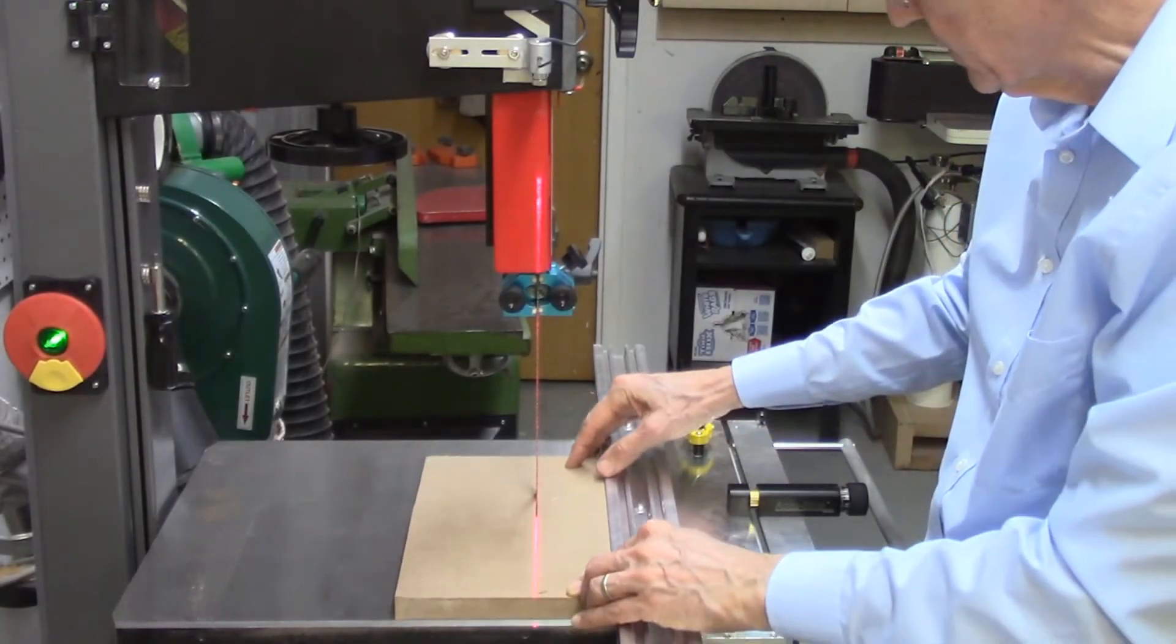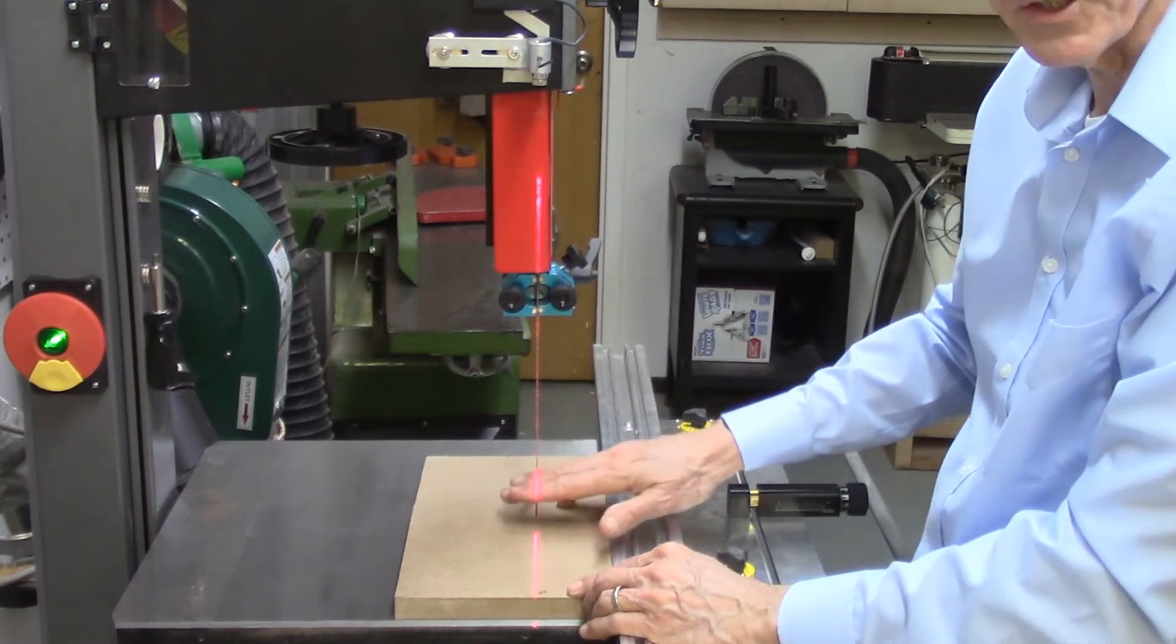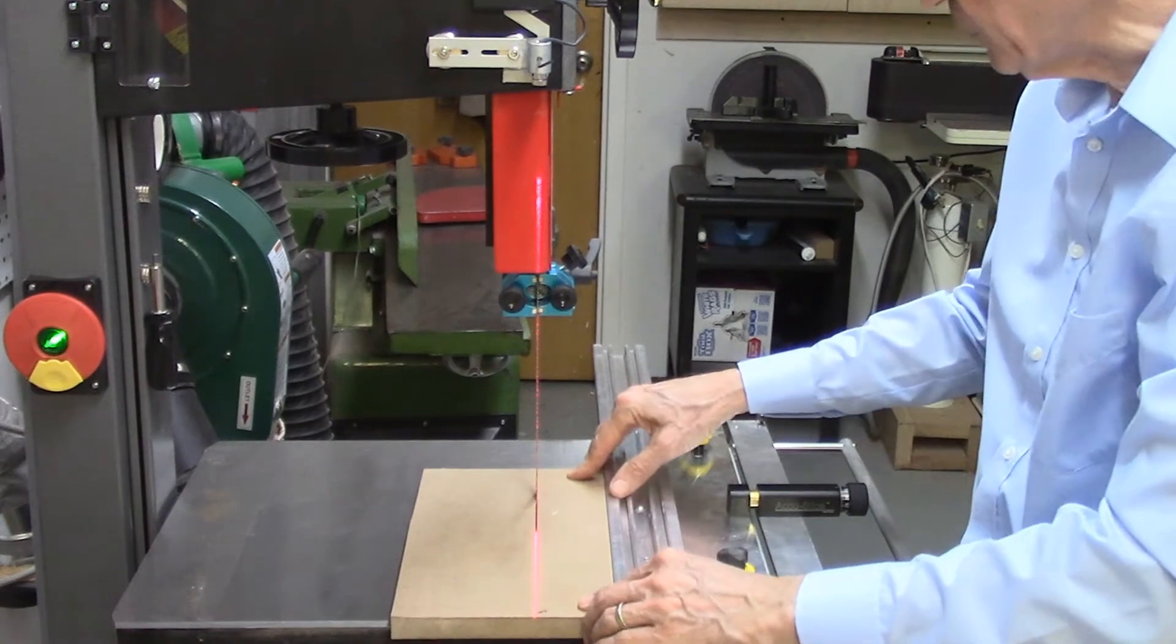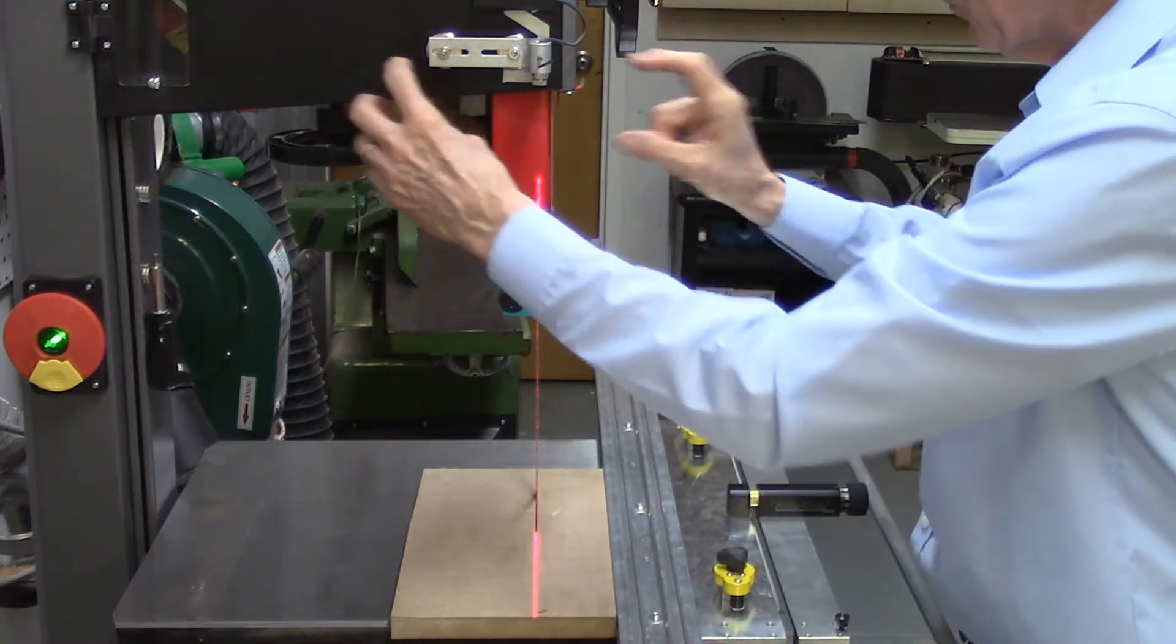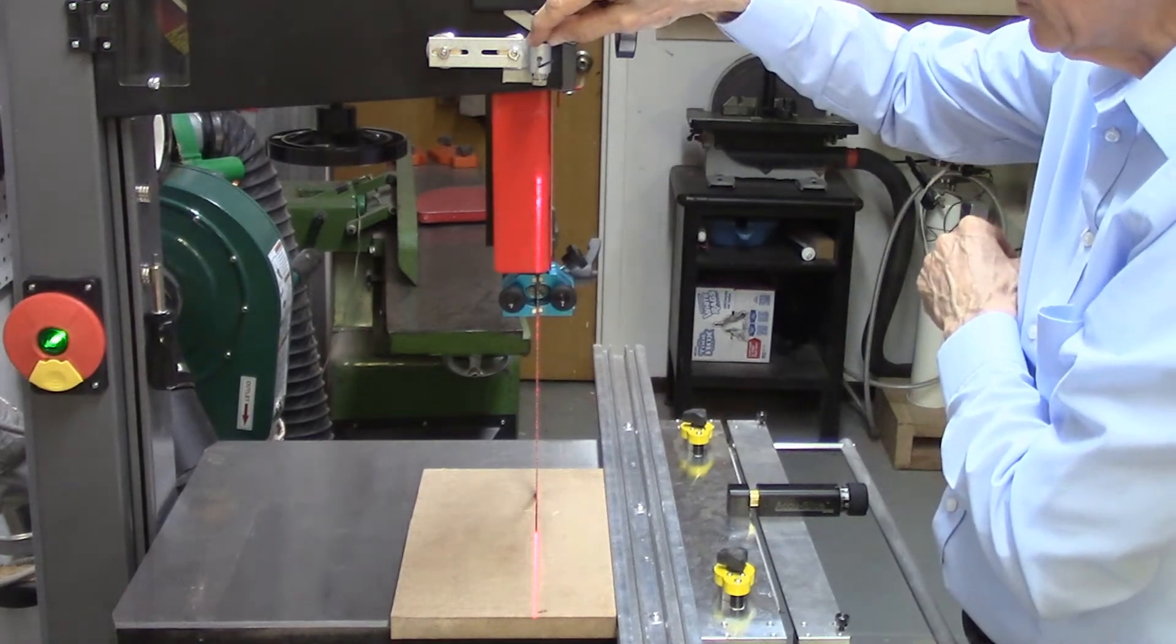So that's perfectly aligned, so no matter what thickness my board is, my laser beam will be exactly where I'm going to be cutting my board. So again, the three steps are left and right movement, rotating, and rotating the laser itself.